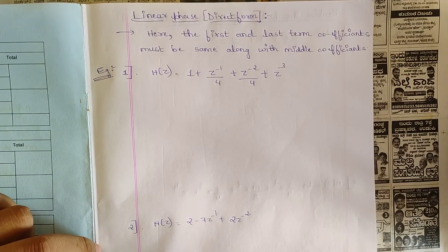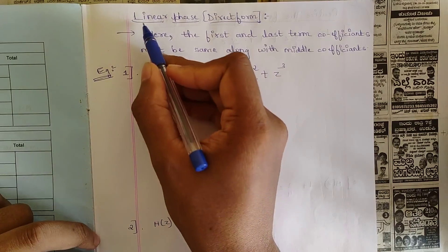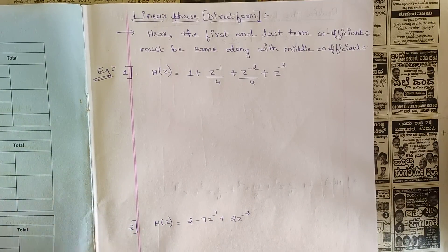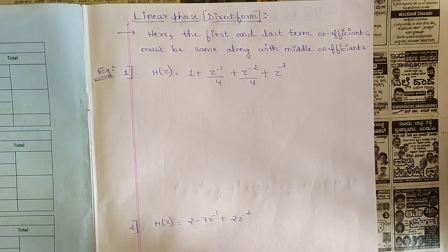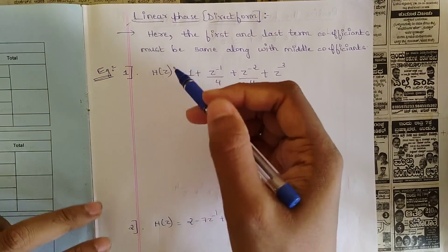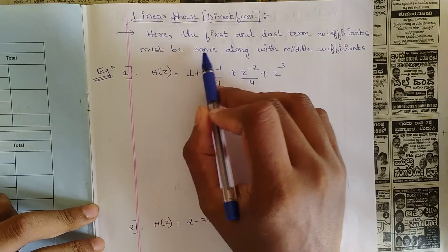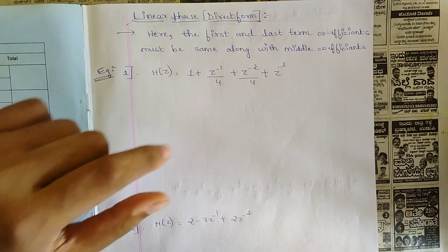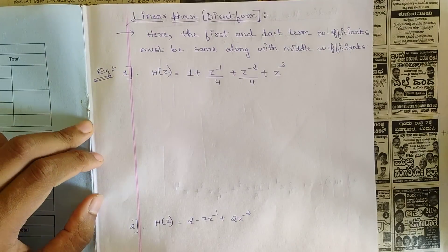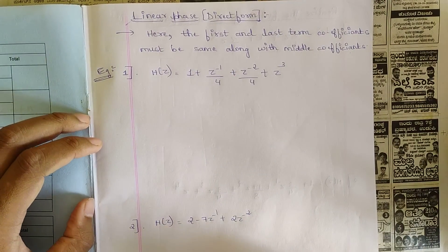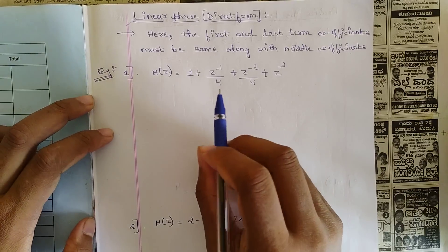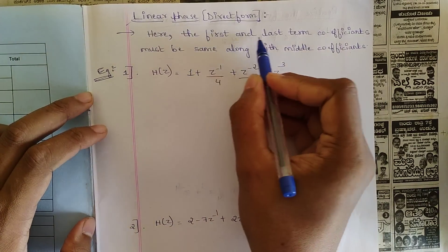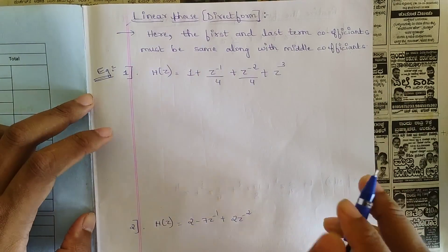Before that, let us discuss what linear phase is in direct form. Linear phase is a condition in an equation where the first and last term coefficients must be the same, along with the middle coefficients. This is the condition for linear phase in direct form. We would be given an equation of H(z), the transfer function, from which we find Y(n).